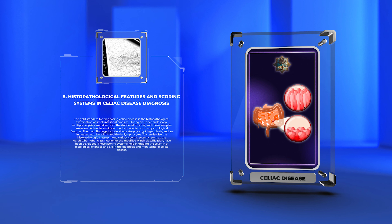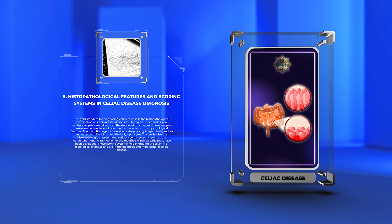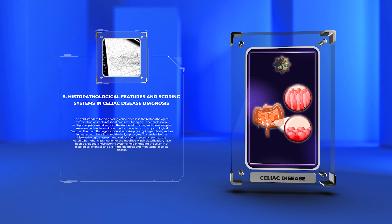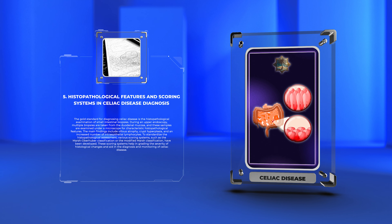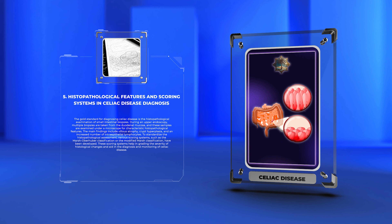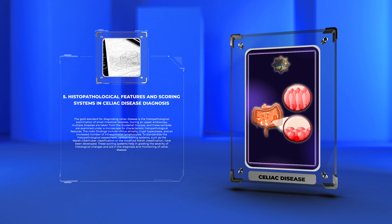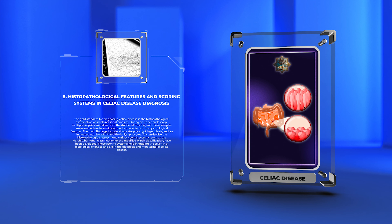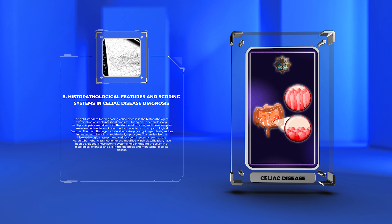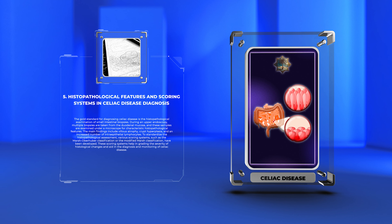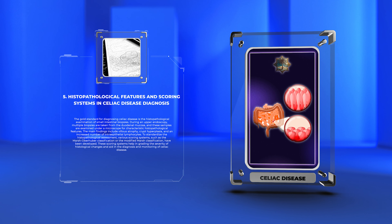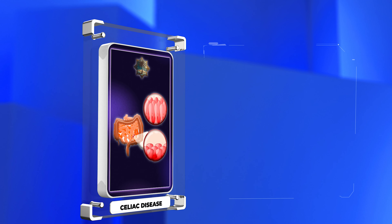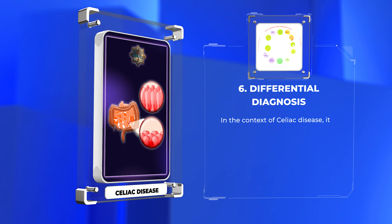The main findings include villus atrophy, crypt hyperplasia, and an increased number of intraepithelial lymphocytes. To standardize the histopathological assessment, various scoring systems, such as the Marsh-Oberhuber classification or the modified Marsh classification, have been developed. These scoring systems help in grading the severity of histological changes and aid in the diagnosis and monitoring of celiac disease.